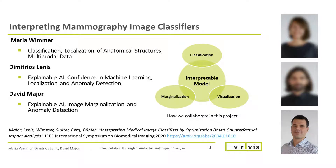Hi, my name is David Major and my research interests are explainable AI, image marginalization and anomaly detection.